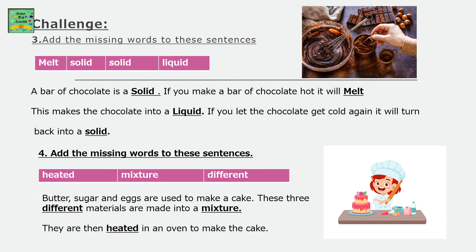Challenge: add the missing words to these sentences. Keywords: melt, solid, liquid. A bar of chocolate is a solid. If you make a bar of chocolate hot, it will melt. This makes the chocolate into a liquid. If you let the chocolate get cold again, it will turn back into a solid.